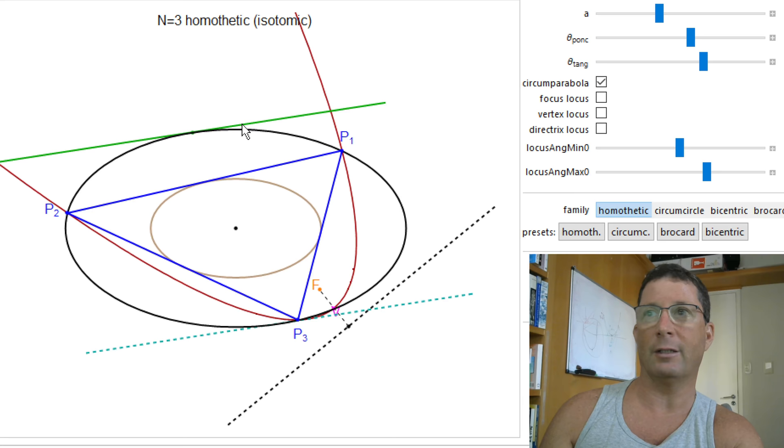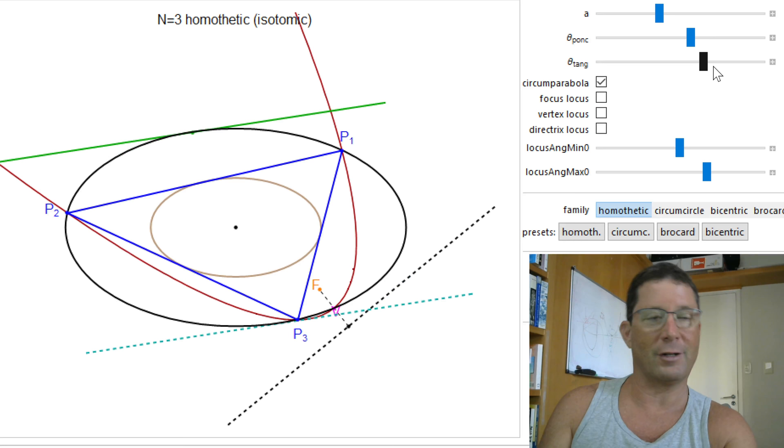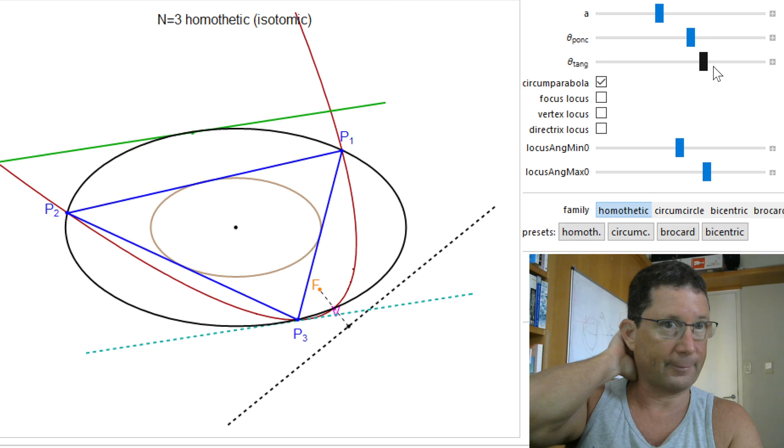And you draw any old tangent to that Steiner, and you compute its isotomic image. So the isotomic image of a tangent to the Steiner is a circumparabola. So if I vary that tangent, I'm going to get a different circumparabola, as you can see here. So it suffices for you to use this trick to actually enumerate or traverse the entire family of circumparabolas of a given triangle.